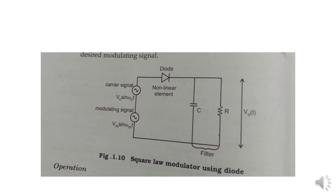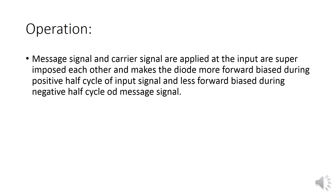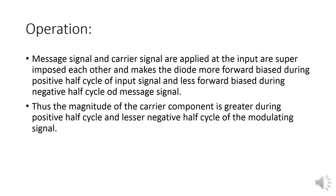This is the diagram for the square law modulator using a diode. The carrier signal and the modulating signal are connected to the diode, which acts as a non-linear element. The filter circuit consists of a resistor and capacitor, and finally we get V0(t), the modulated signal. The message signal and carrier signal are superimposed, making the diode more forward biased during the positive half cycle and less forward biased during the negative half cycle of the message signal. The magnitude of the carrier component is greater during the positive half cycle and less during the negative half cycle of the modulating signal.